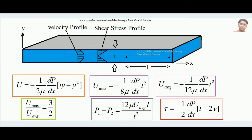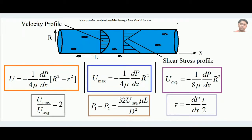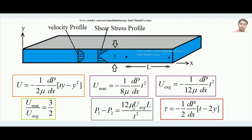Multiplying u_avg by 3/2 gives u_max (since 12 × (2/3) = 8). Therefore, u_max / u_avg = 3/2 for Poiseuille flow between two parallel plates. For two points distance L apart, the pressure difference is: p1 − p2 = 12μ u_avg L / t².